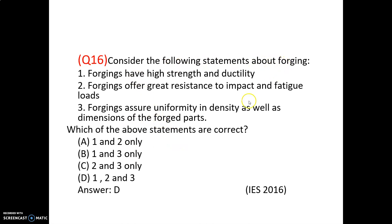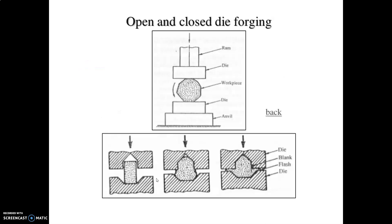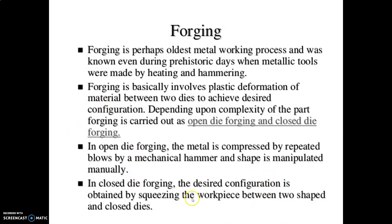Forging involves plastic deformation of material between two dies to achieve a desired configuration. There are two types: open die forging and closed die forging. In open die forging, metal is compressed by repeated blows from a mechanical hammer and the shape is manipulated manually. In closed die forging, the exact shape is obtained by squeezing the workpiece between two shaped closed dies with no wastage.